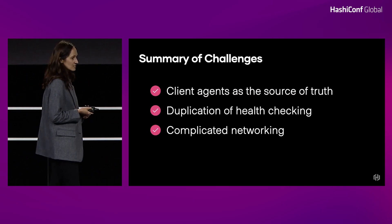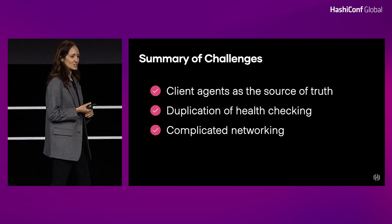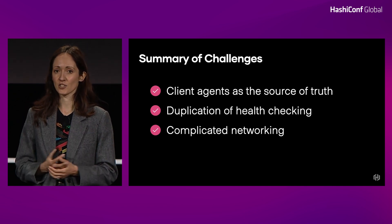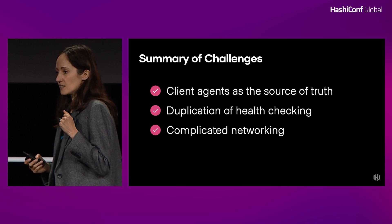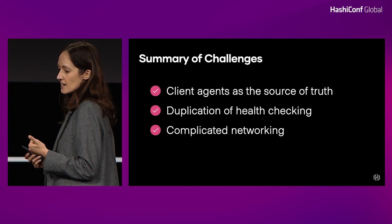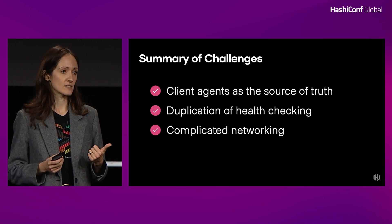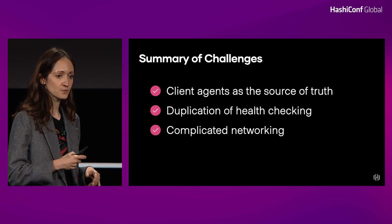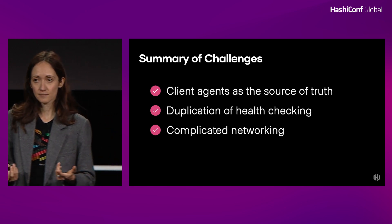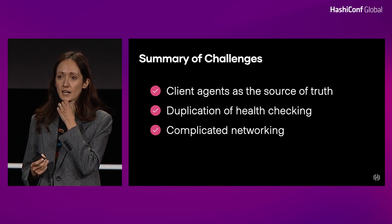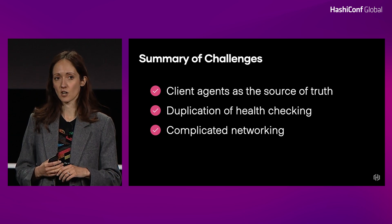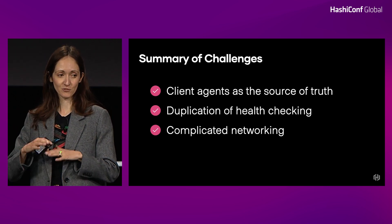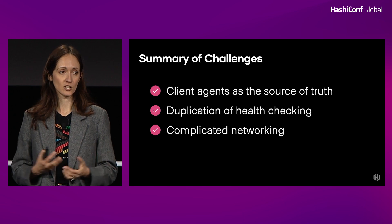We talked about the challenges with our current architecture. There are three: one, Consul clients being the source of truth does not always hold true in container orchestrators — the container orchestrator is the source of truth. Two, we talked about duplication of health checking. And lastly, we talked about how the networking setup is complicated because of gossip. In the demo, I showed what happens if you remove that flat network — your cluster cannot work anymore.